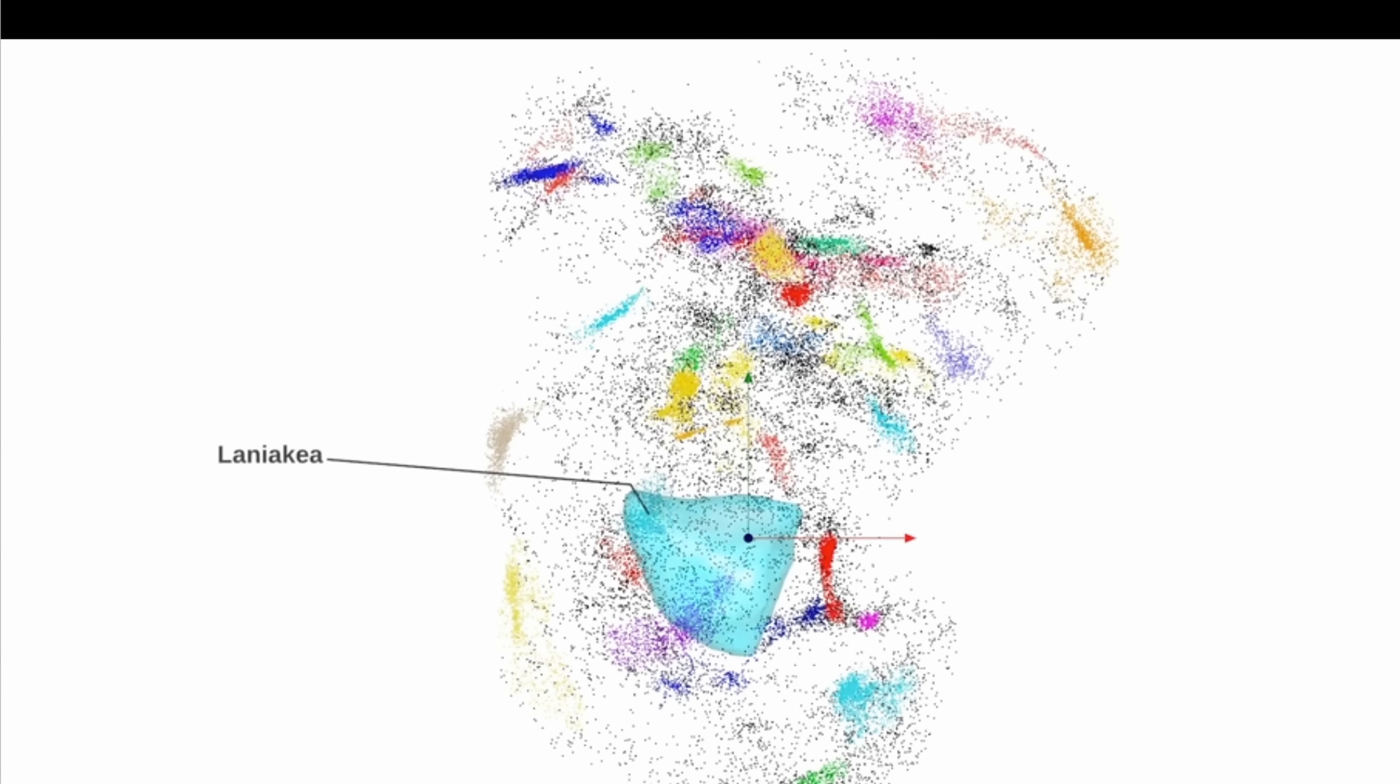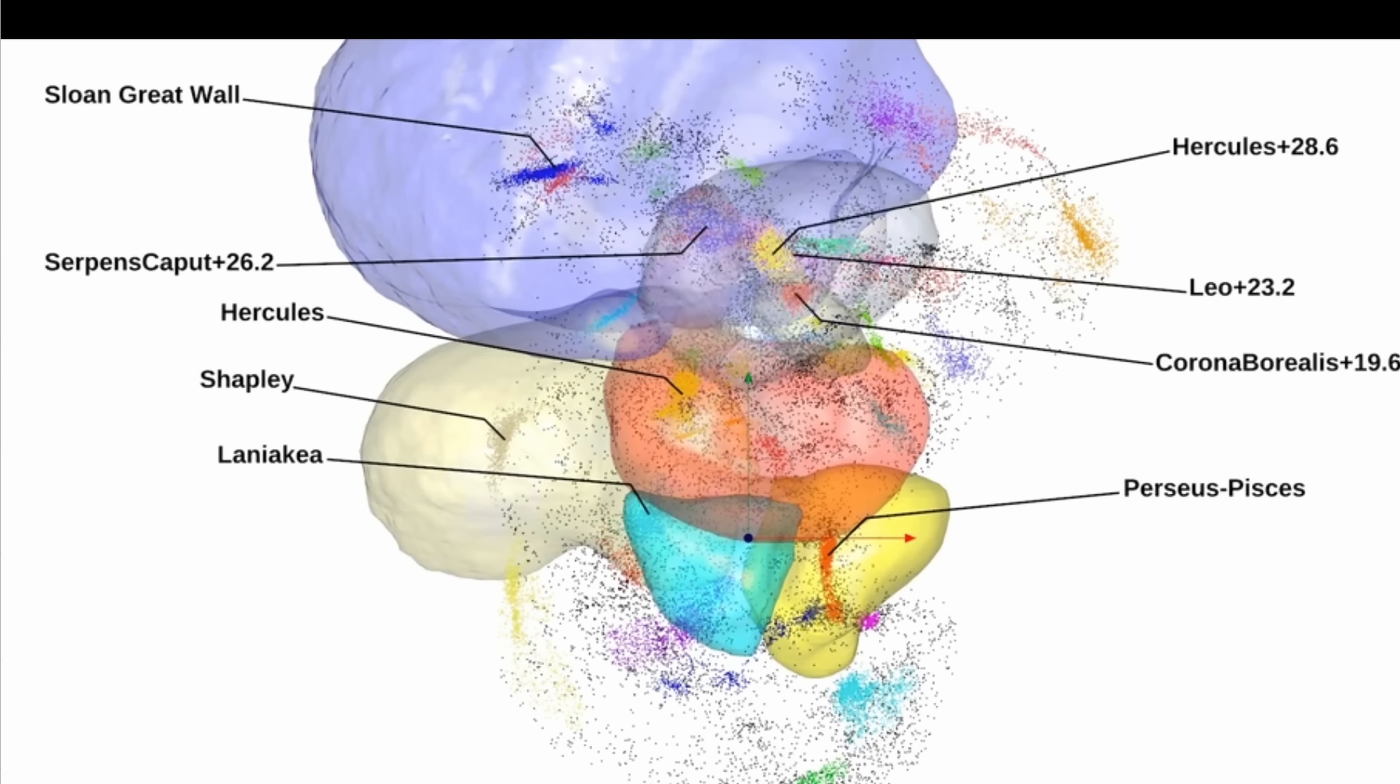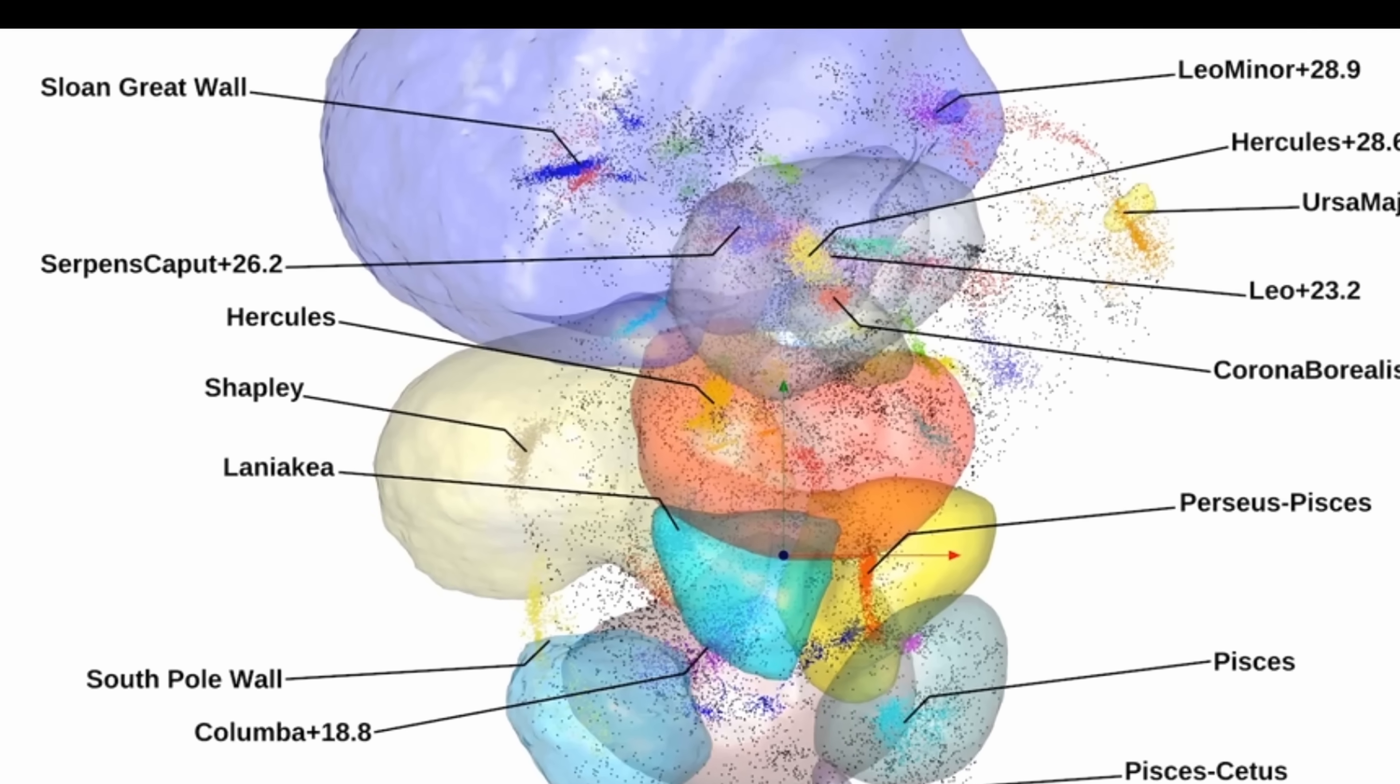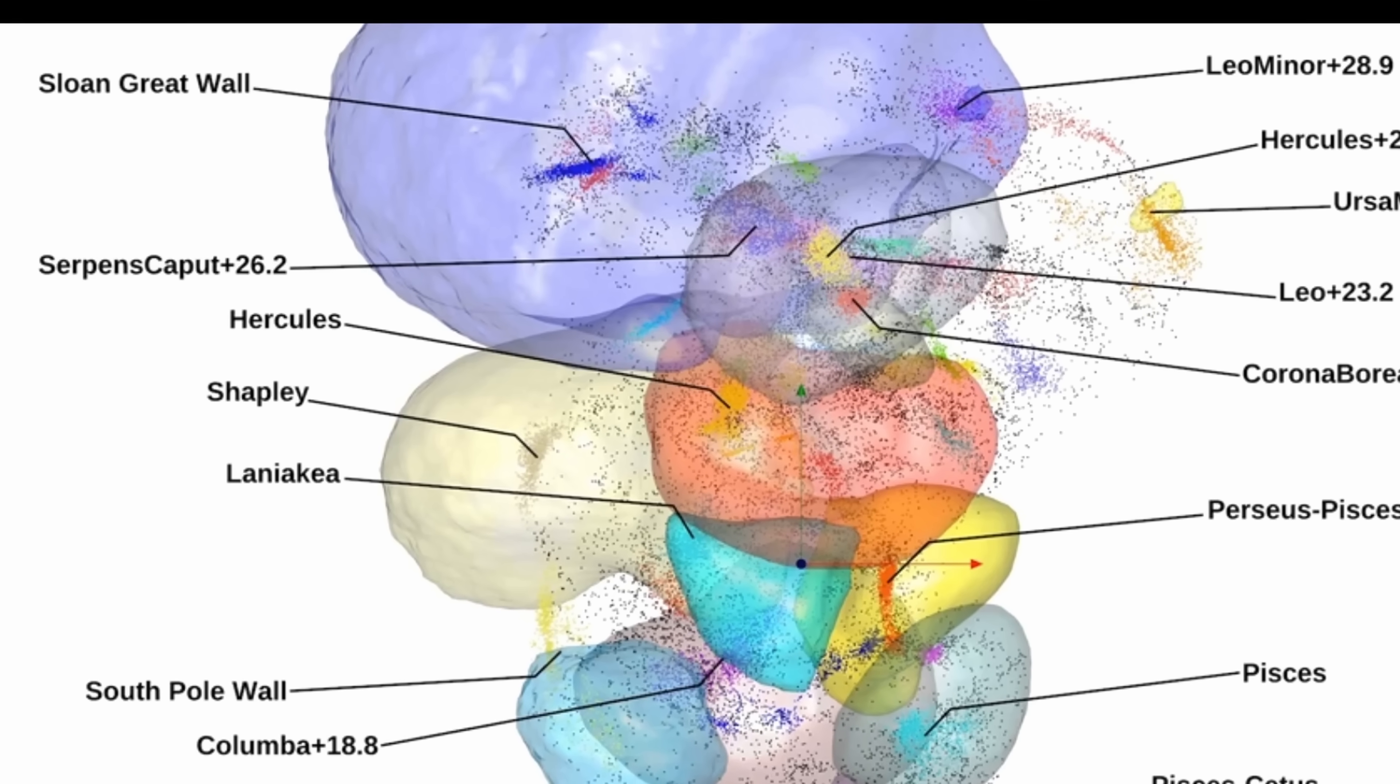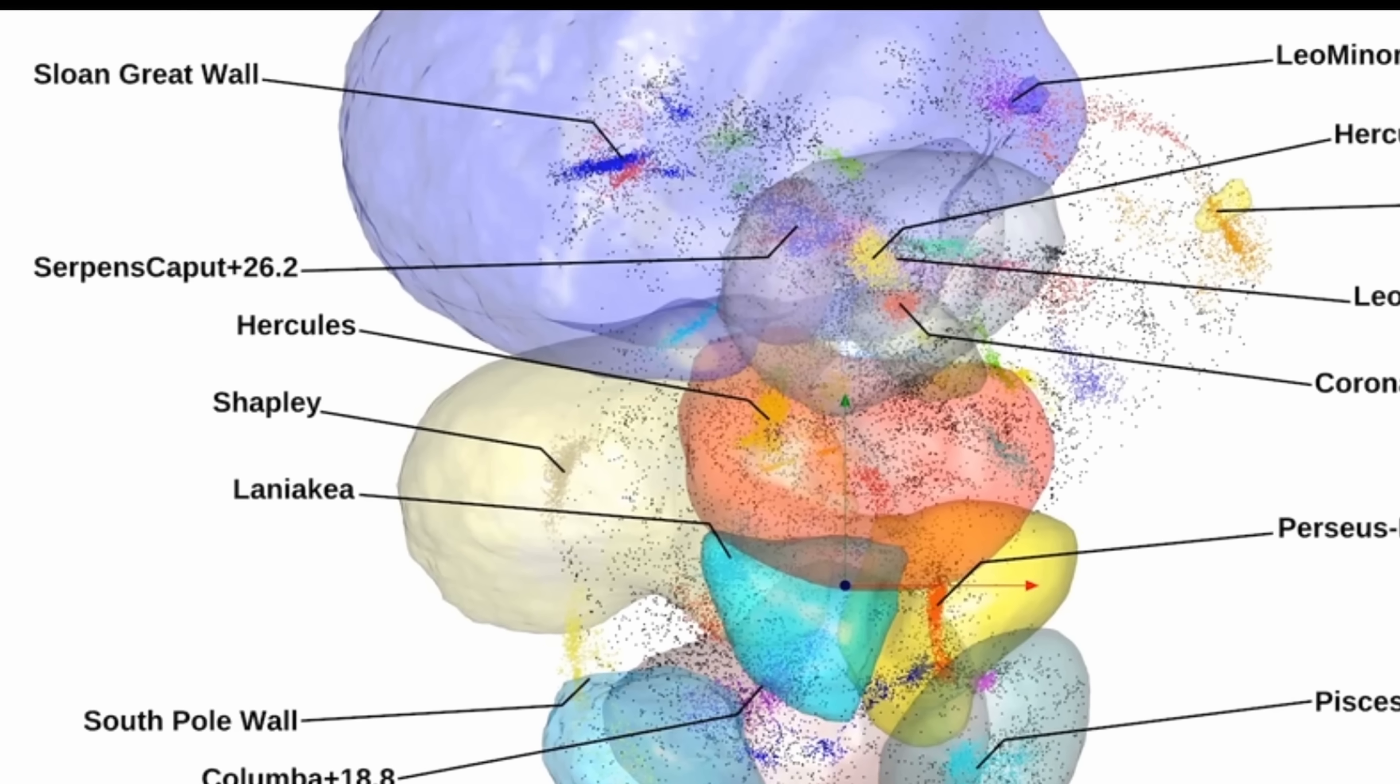As a matter of fact, one of the additional discoveries in the study is essentially other superstructures and their overall map. And amongst these newly identified regions, one of them really stood out. The so-called Sloan Great Wall. It seems to be the largest basin of attraction currently known to us, and as you can see from this simulation, is definitely much larger than Shapely and Laniakea together.